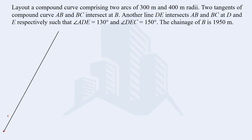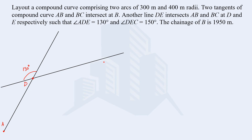Let's set up the sketch. The back tangent starts at point A. Since angle ADE is given, we can draw line DE at 130 degrees with line AB — this locates point D. Since angle DEC is given as 150 degrees, we can draw line BC such that it makes 150 degrees with line DE, locating points E, B, and C.